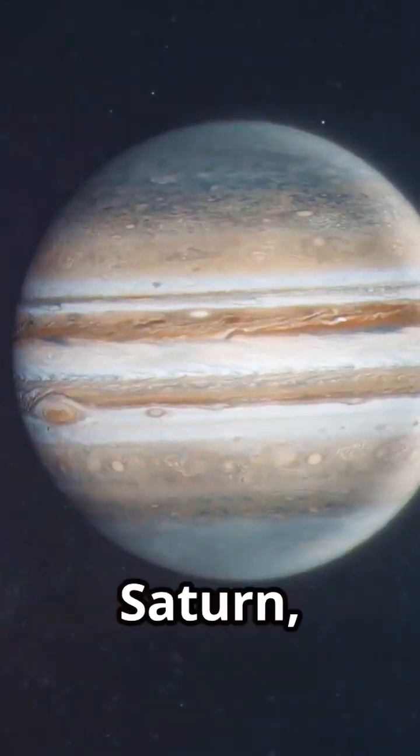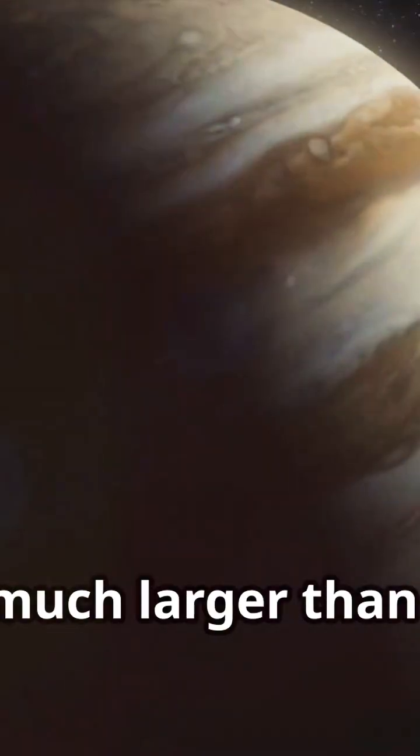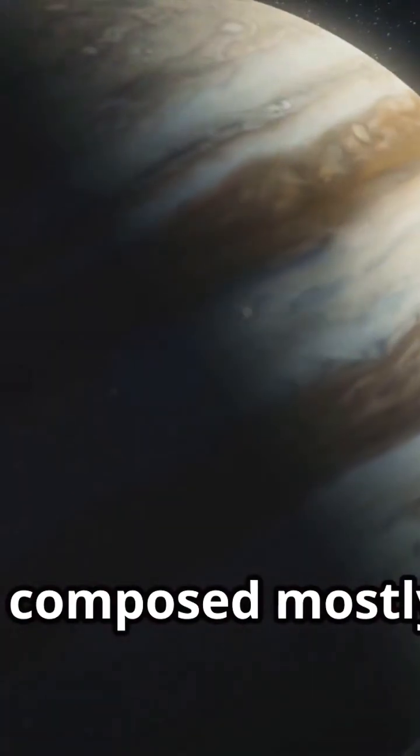The outer four planets, Jupiter, Saturn, Uranus and Neptune, are gas giants. They are much larger than the inner planets and are composed mostly of gas and ice.